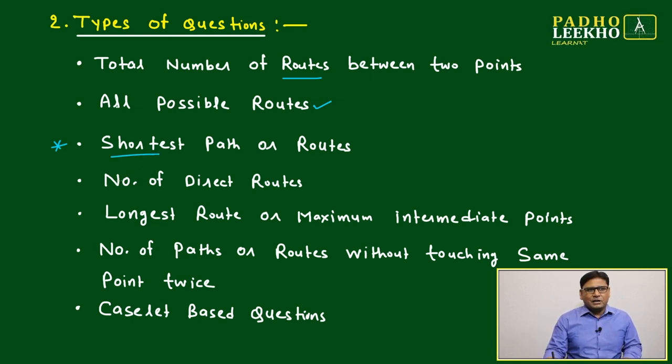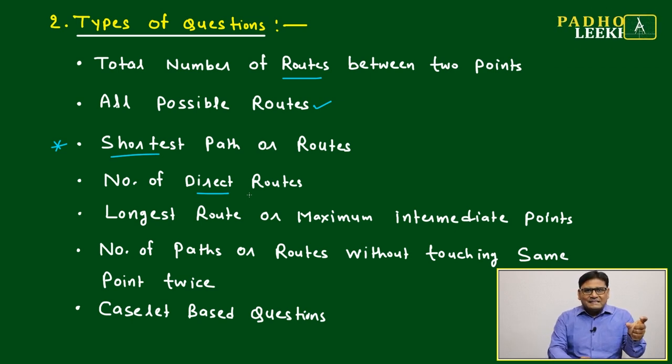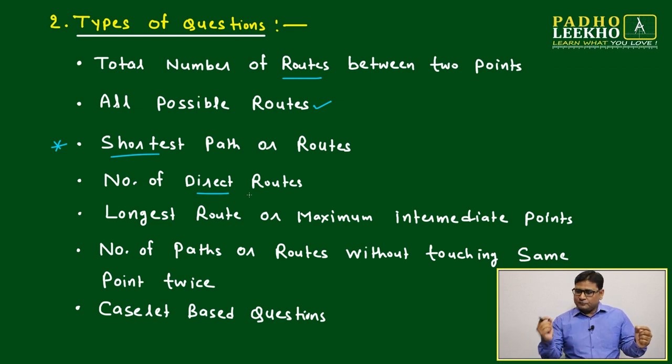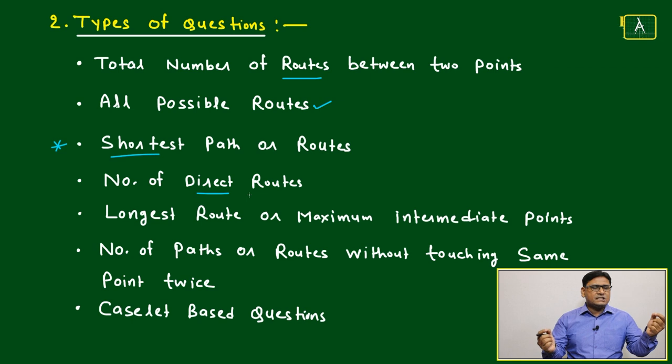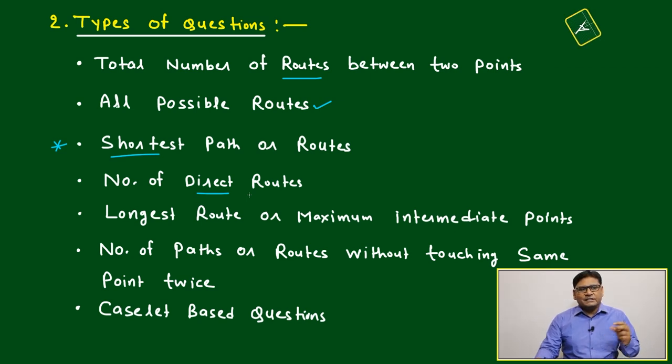Next is your number of direct route. One will be direct route, one will be intermediary route, means between your starting and destination few other points also will come. Either you are halting there or not halting, that is different, but few stations or few points or few cities you have to cross to reach your destination. And another route will be there that is direct, means you have started from city C1 and you are reaching city C2. In between nothing is there, no other city is there, no halting is there, no intermediary station is there.